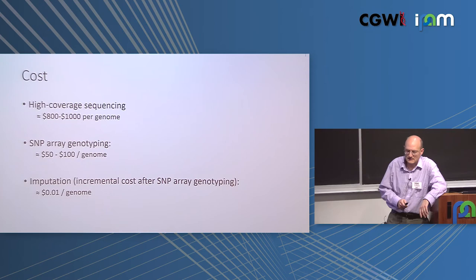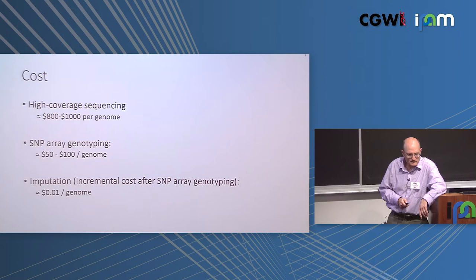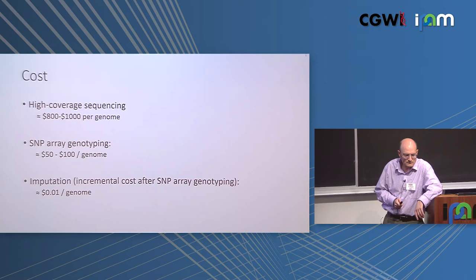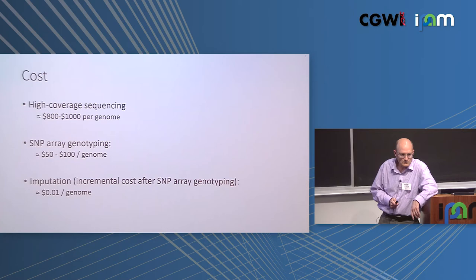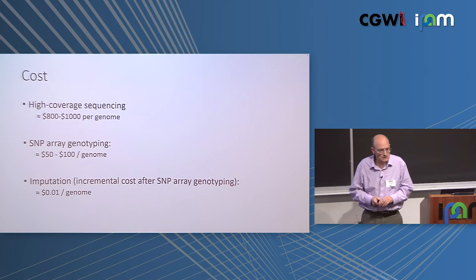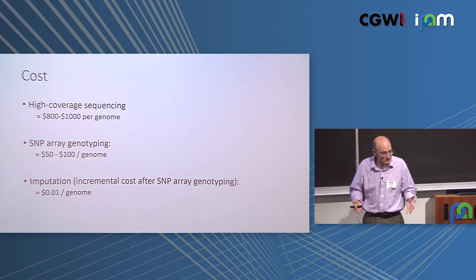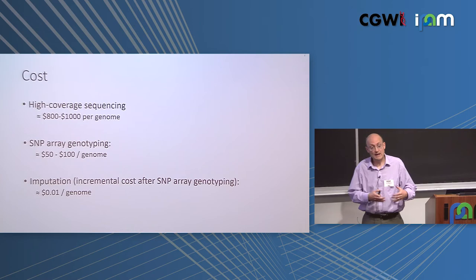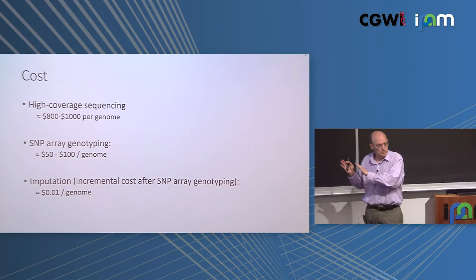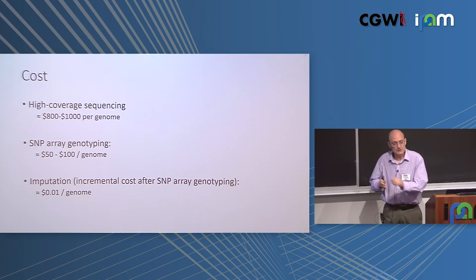A question was raised about how good reference genomes are and whether there's enough coverage to accurately impute any individual. It depends more on the marker — lower frequency variants are harder to impute. It also depends on whether the reference panel came from high-coverage or low-coverage sequence data. Right now most reference panels are low coverage, but that's changing rapidly. High coverage reference panels are coming online, and that's going to help quite a bit.